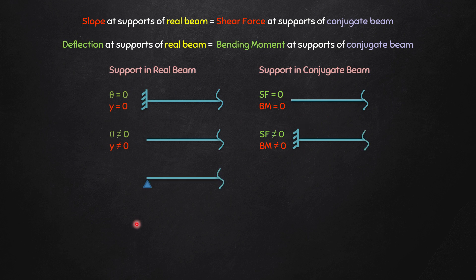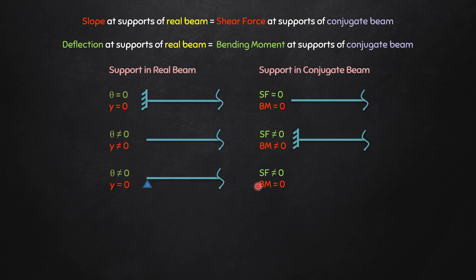If you have a hinged support at one end, slope is not zero — slope is allowed — but the vertical deflection y equals zero. Correspondingly, shear force should not be zero but bending moment should be zero. That is a pin or hinged support. So if you have a hinged support at the end in the real beam, you will have a hinged support at the end in the conjugate beam.